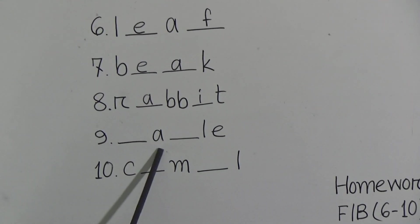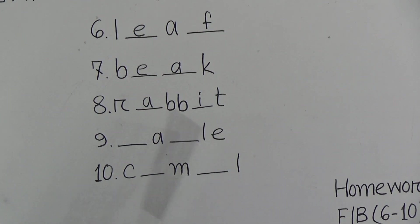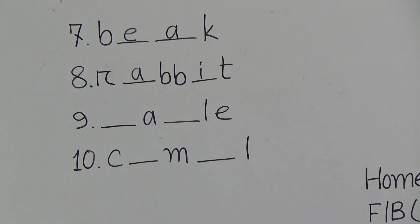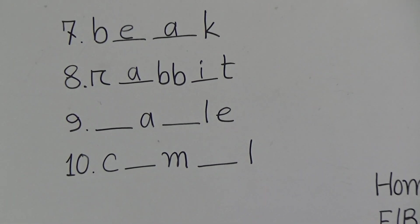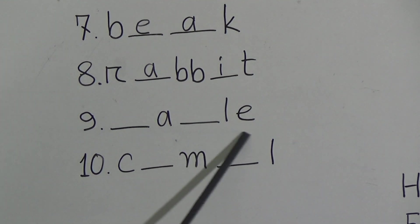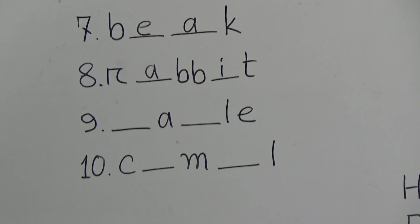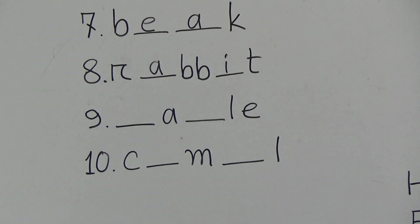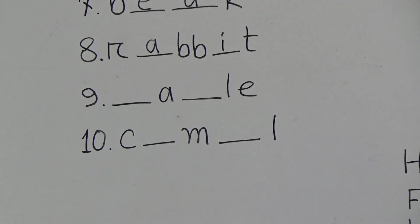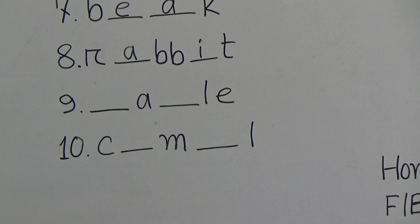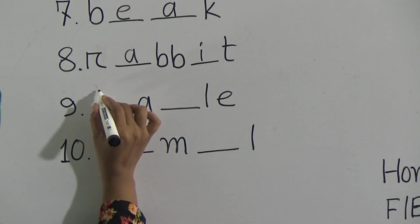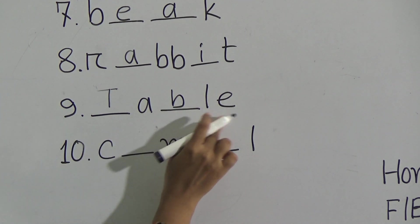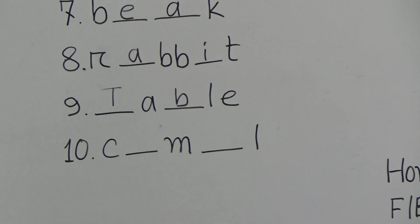Now come to number nine: T gap A B gap L-E. Students, can you guess the word? What will be the word? I'm helping you - this is a name of a furniture. You can see this furniture in your home, in your school. I hope you guess the word. This is table, T-A-B-L-E, table. This is a kind of furniture. So spell with me: T-A-B-L-E, table.